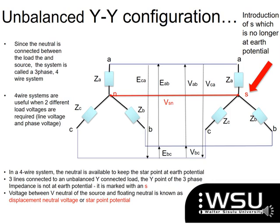The star point in the three-phase impedance is not at earth potential, which is why we've introduced S. The voltage between the neutral of the source and the floating neutral S is called the displacement neutral voltage, or the star point potential. I have drawn in that line, and that line represents our VSN.